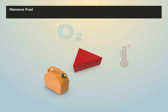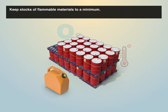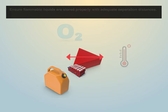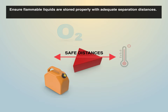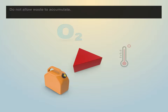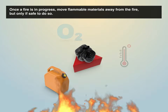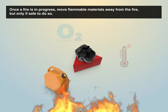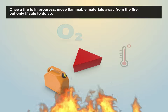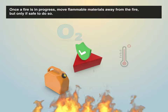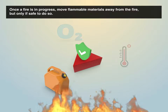Remove fuel. Ways to reduce fuel in the workplace include: keep stocks of flammable materials to a minimum, ensure flammable liquids are stored properly with adequate separation distances, and do not allow waste to accumulate. Once a fire is in progress, move flammable materials away from the fire, but only if safe to do so.